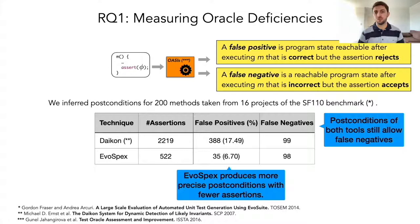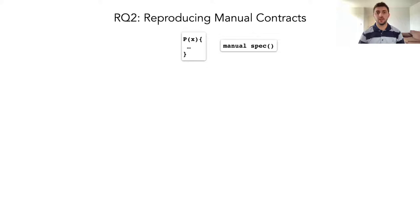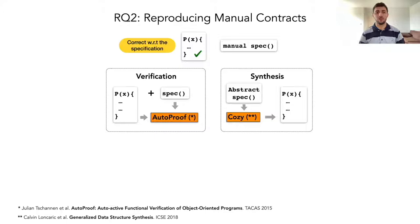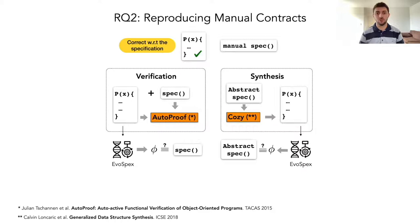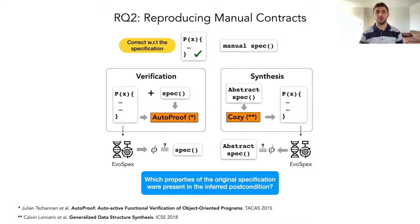Then, in the second experiment, since our technique derives the post-conditions from the program behavior, in order to analyze the reproduction of manually written contracts, we needed programs that were correct with respect to a manually provided specification. Thus, we took some classes from a verification context in which the programs had already been proved correct with respect to the specification, and from a synthesis context in which the programs were derived from an abstract specification. Then, we used EvoSpex to produce post-conditions for these programs and then compared which properties of the original specification were present in the inferred post-conditions.